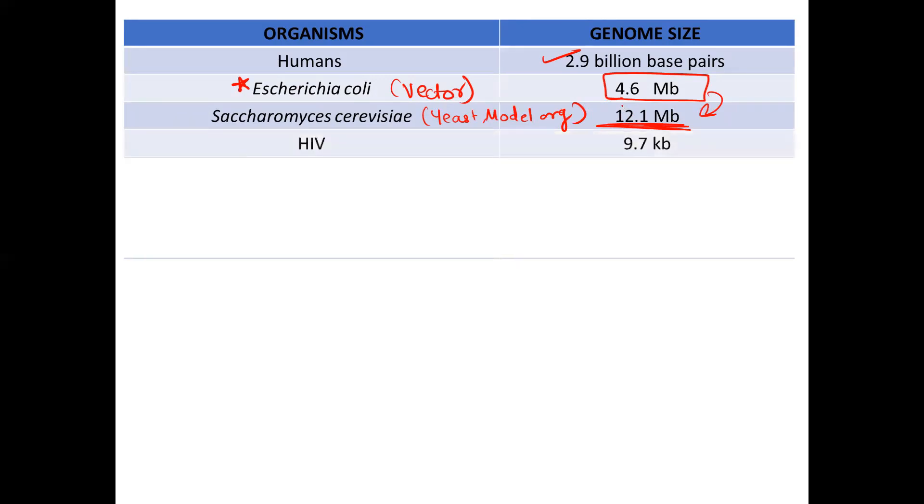Then next you have HIV virus, human immunodeficiency virus, that is having basically the genome size of 9.7 KB. So a very small genome. Next you have lambda phage which is having a genome of 48 KB.